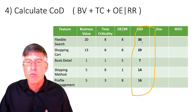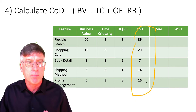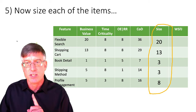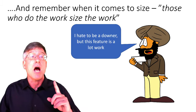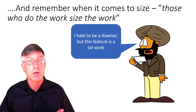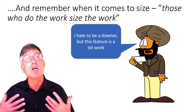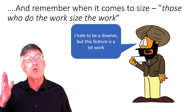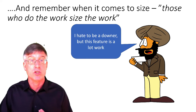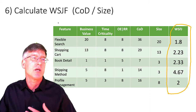So strictly based on value, we would do flexible search first, followed by shopping cart, followed by profile management, shipping method, and then book detail. Now we bring in the size. Flexible search is fairly large; shopping cart and the others are small to moderate. And my favorite mantra: those who do the work size the work. When you are doing this exercise, you need a representative of the team or the development organization there to put the legitimate size on this work. You need input from those who will actually do the work.